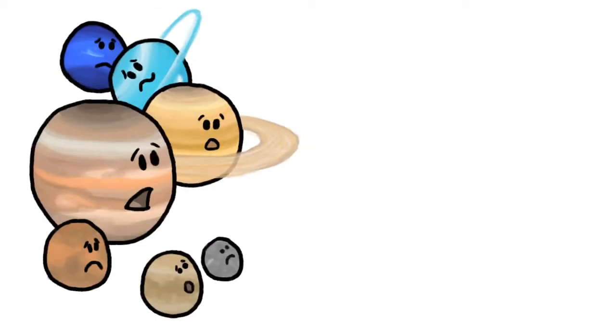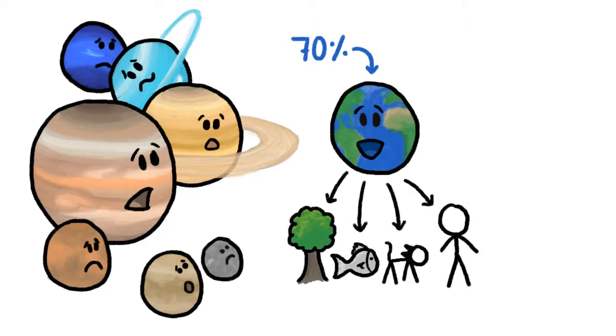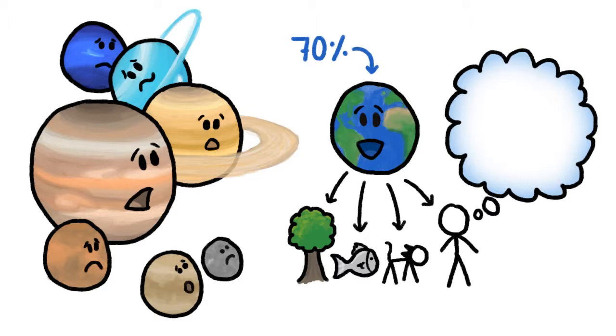Unlike every other planet in our solar system, Earth's surface is 70% liquid water, which while useful for life, is also kind of weird, because everything we know about how and when our planet formed says Earth's surface should be bone dry.